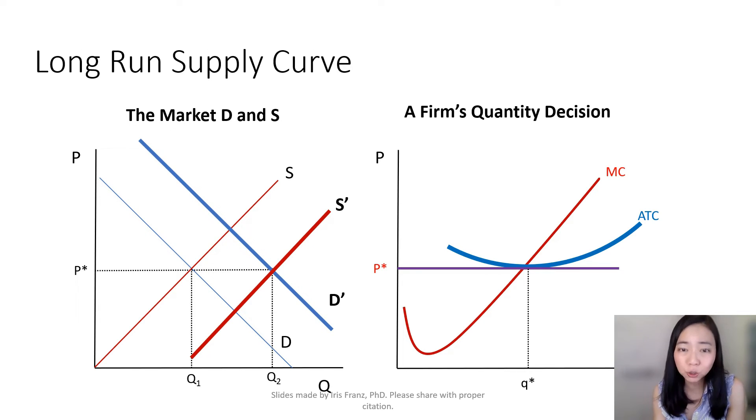As a result, that will attract entry, which will shift your supply curve from S to S prime. And that is going to drive down the price again, and the current firms will again make zero economic profit.